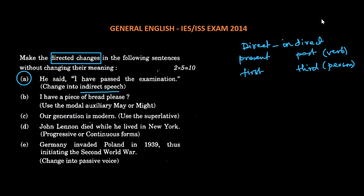So here we have, he said, I have passed the examination. Have should change to had, and I will change to he. So these are the two changes. So the sentence in indirect speech would be, he said that he had passed the examination.